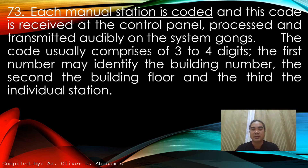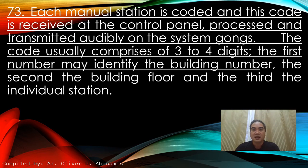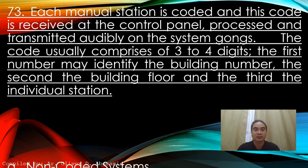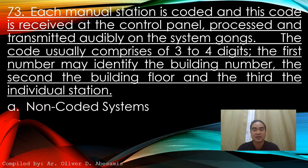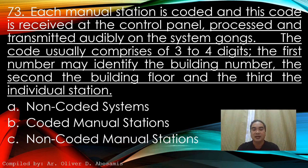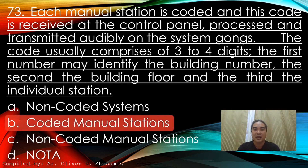Each manual station is coded, and this code is received at the control panel, processed and transmitted audibly on the system. The code usually comprises three to four digits: the first number may identify the building number, the second the building floor, and the third the individual station. A. Non-coded systems. B. Coded manual stations. C. Non-coded manual station. D. None of the above. Answer: B. Coded manual stations.